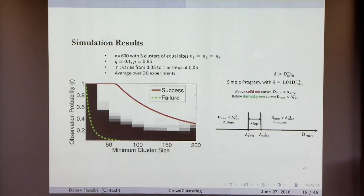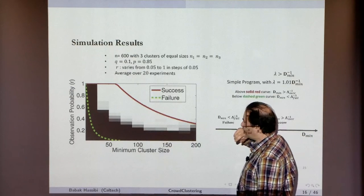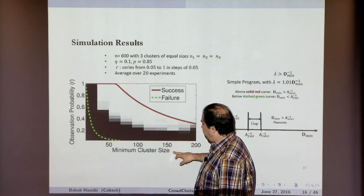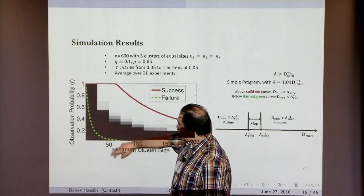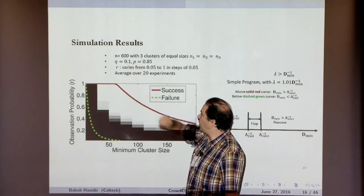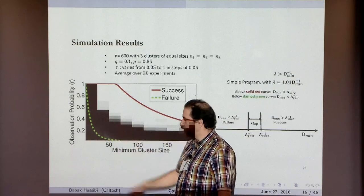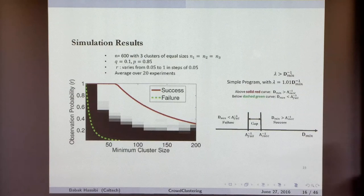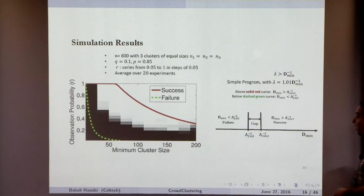We also have a failure condition — at worst there's a factor of 4 between them, but the √n behavior is what comes up. We won't go through the proof — it's just examining KKT conditions. Here is the simulation result: black means failure, white means success. I'm plotting observation probability R versus minimum cluster size. P = 0.85, Q = 0.1, n = 600. As the minimum cluster size gets small, it becomes harder to succeed. The upper and lower bounds match the actual performance, showing a clear phase transition.